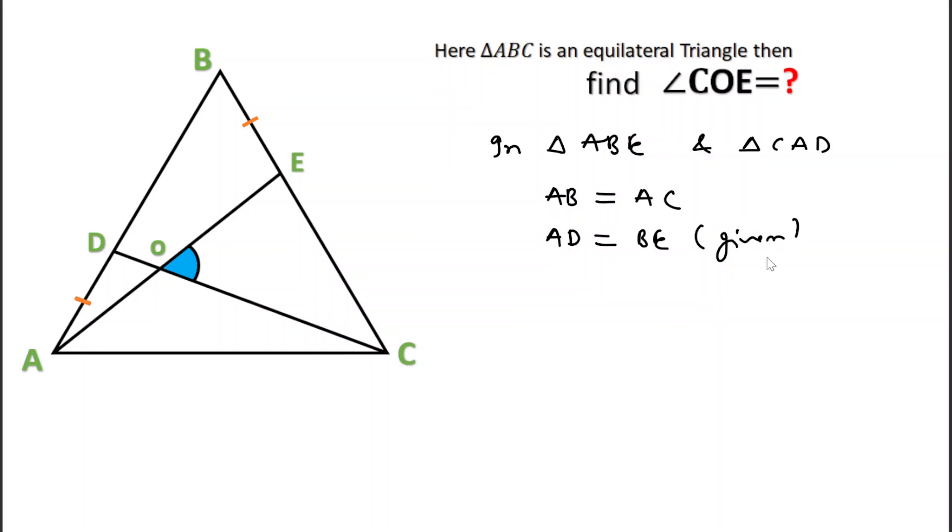And angle CAD will be equal to angle ABE. Why? Because each angle of equilateral triangle is equal to 60 degrees, so this angle and this angle will be equal to 60 degrees. So by side-angle-side triangle...